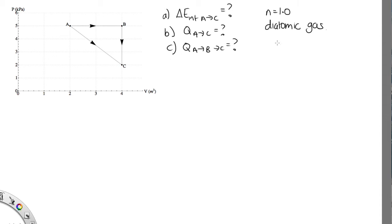Questions like this are always much easier if we can use the first law of thermodynamics, that the change in internal energy is equal to Q plus W. Now in this first case, going from A to C, we can't use this as we have no information about Q. So while W can be calculated relatively easily, that's not going to help us find the internal energy, because this is not the Cp case nor the Cv case — we don't have constant pressure or volume. So we're going to have to go about this the hard way, which is to use the ideal gas law, PV is equal to nRT.